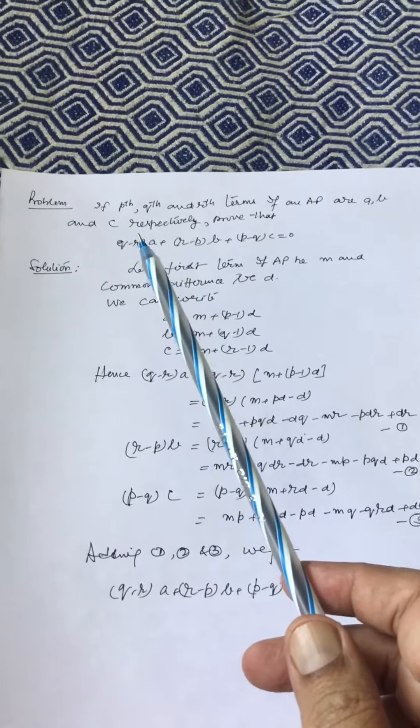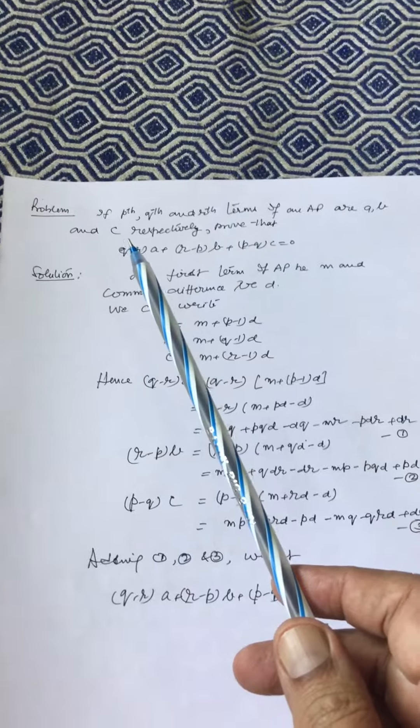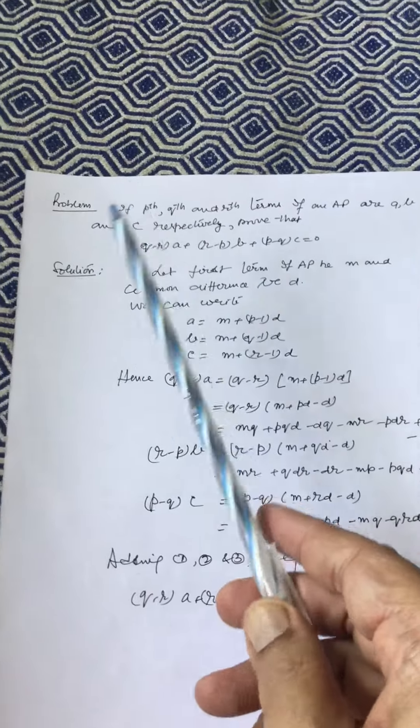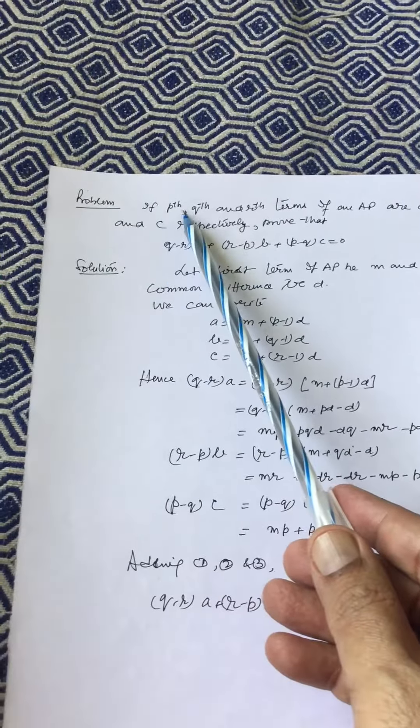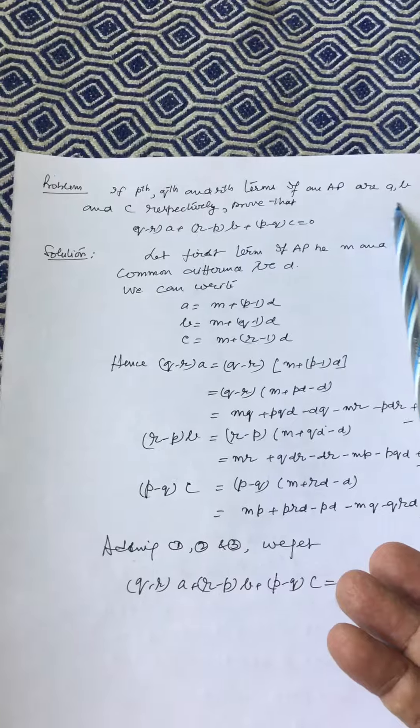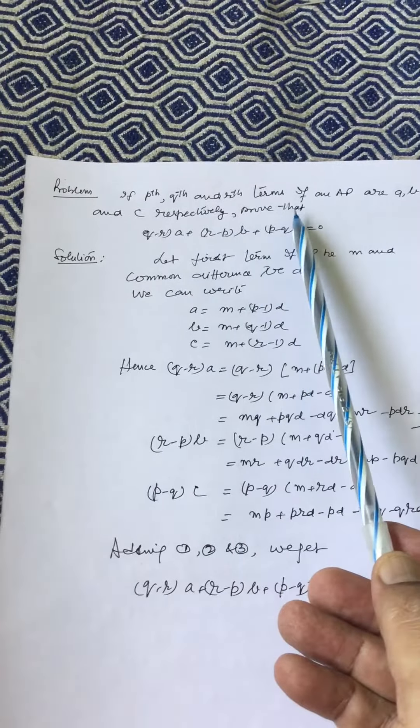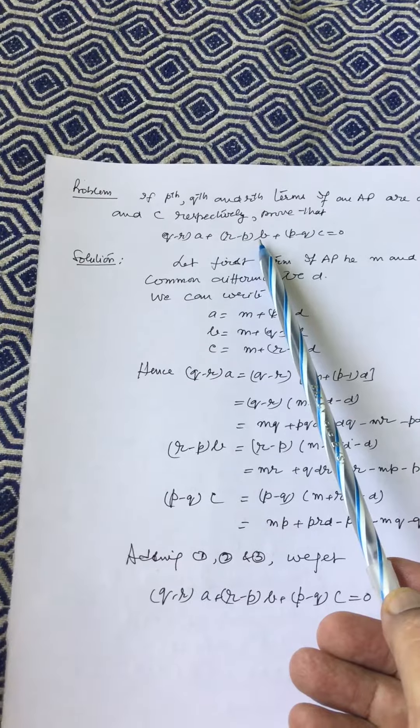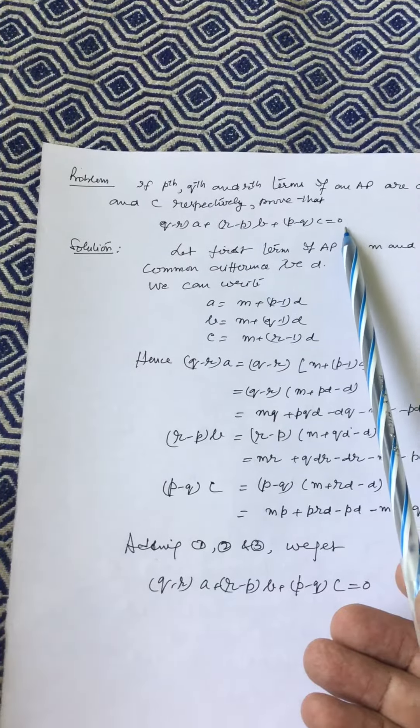We will see some problems on arithmetic progression. Problem: if Pth, Qth and Rth terms of an AP are A, B and C respectively, prove that (Q-R)A + (R-P)B + (P-Q)C equals 0.